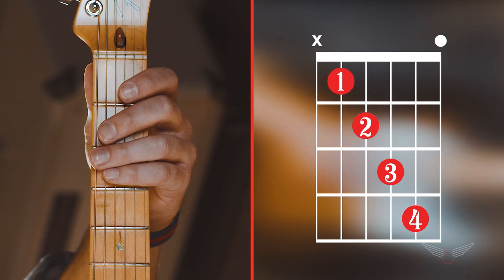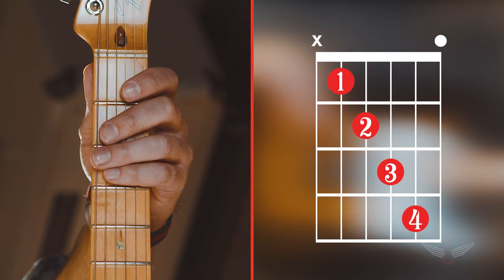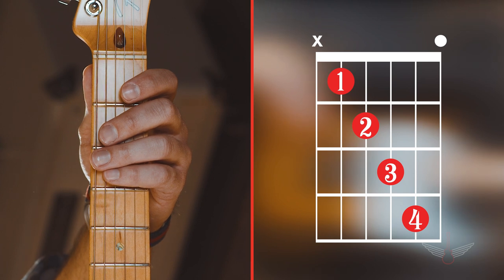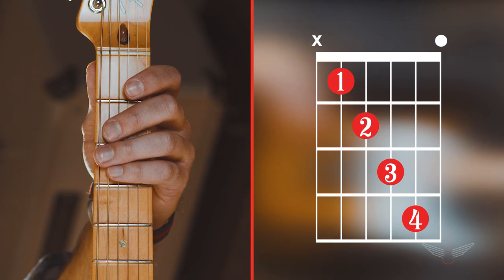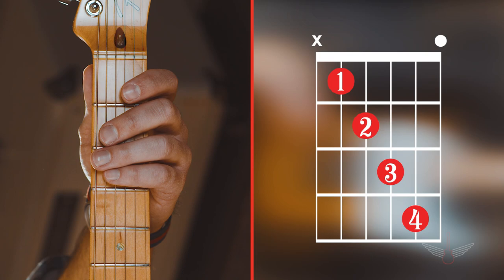These X's and O's represent which strings are played and which are not. X's are strings that are not played, and O's are strings that are played open.